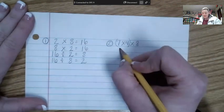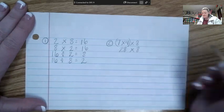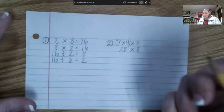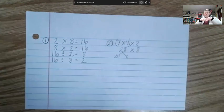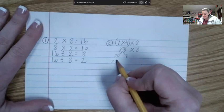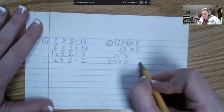So I'm going to rewrite the problem. 28 times 8. Well, now I'm going to use the break apart strategy. Break, break, break it apart. Pass, pass, pass it out, right? So we have 20 times 8 plus 8 times 8.